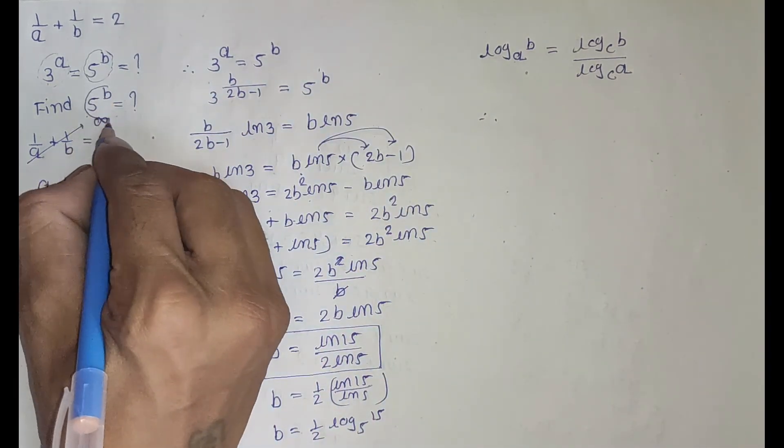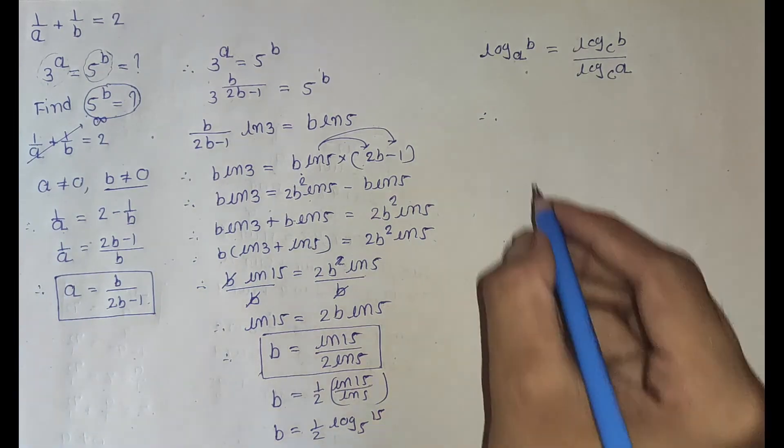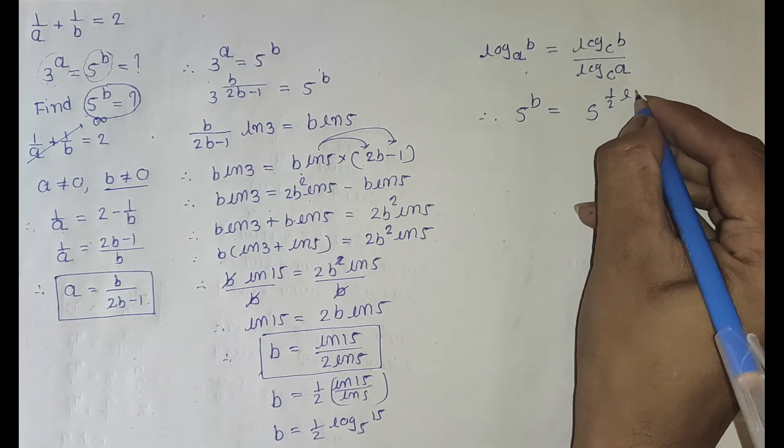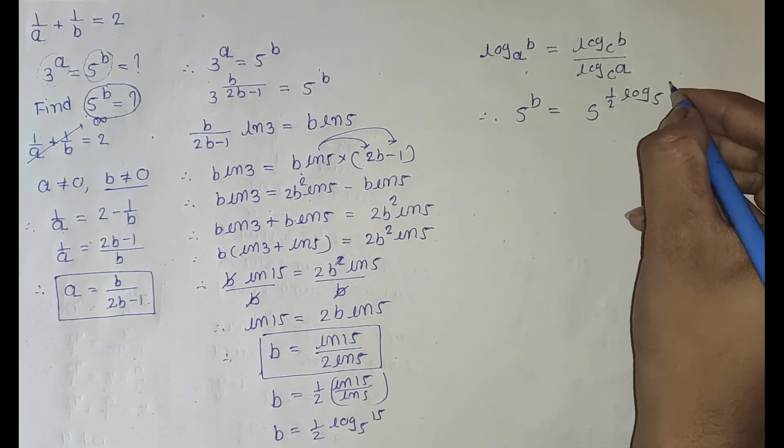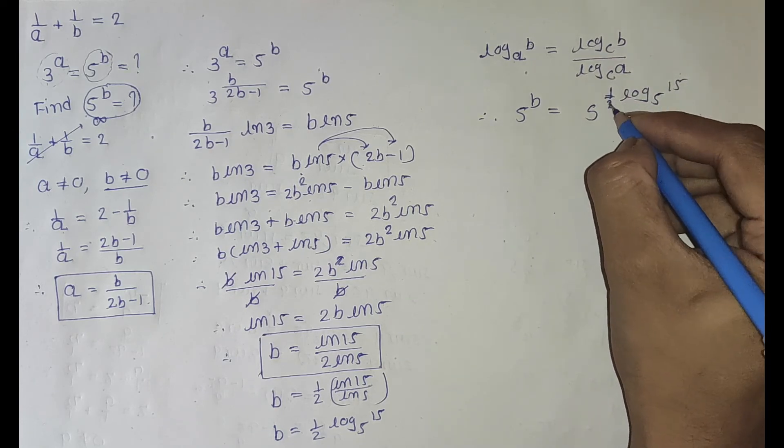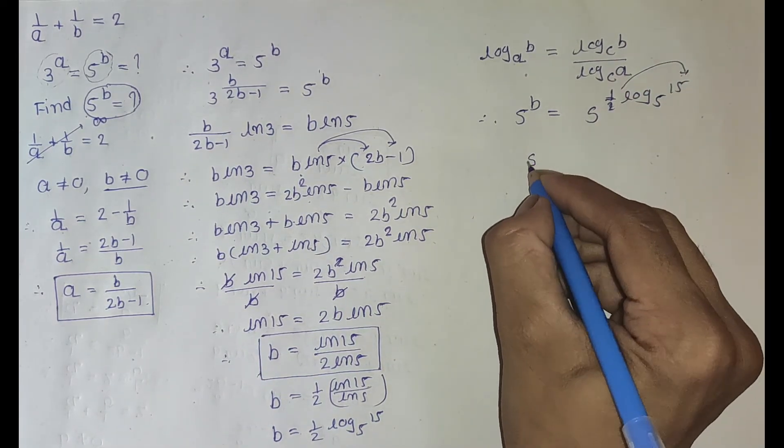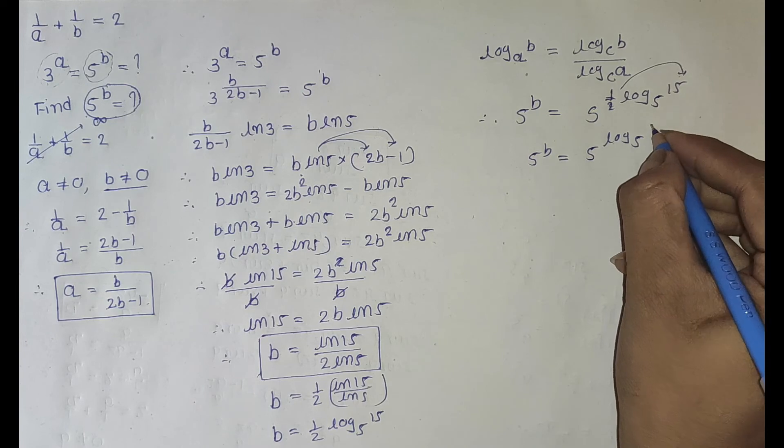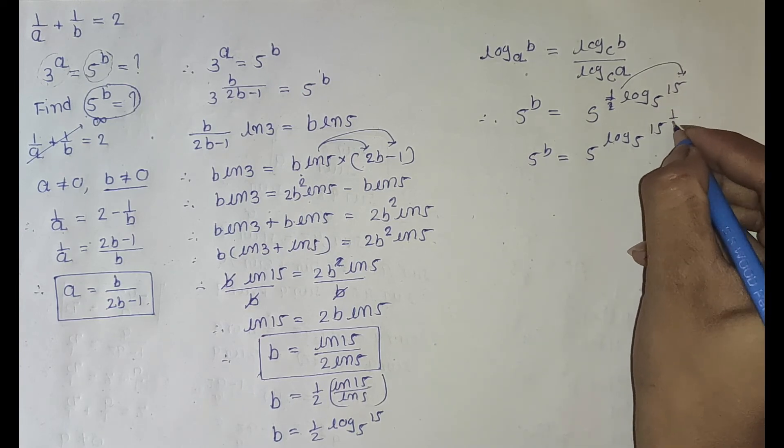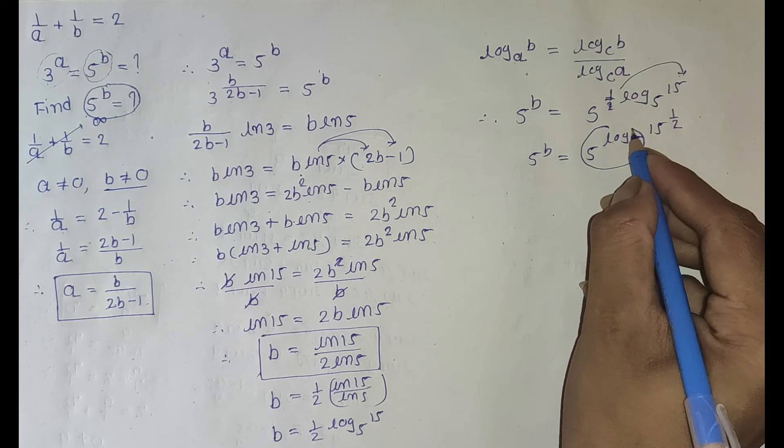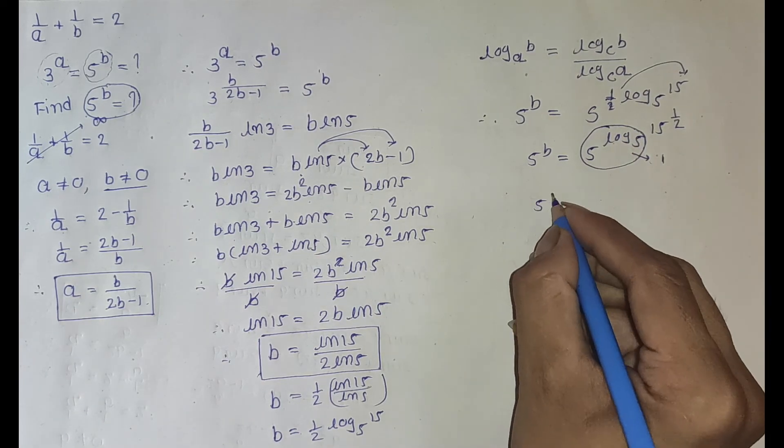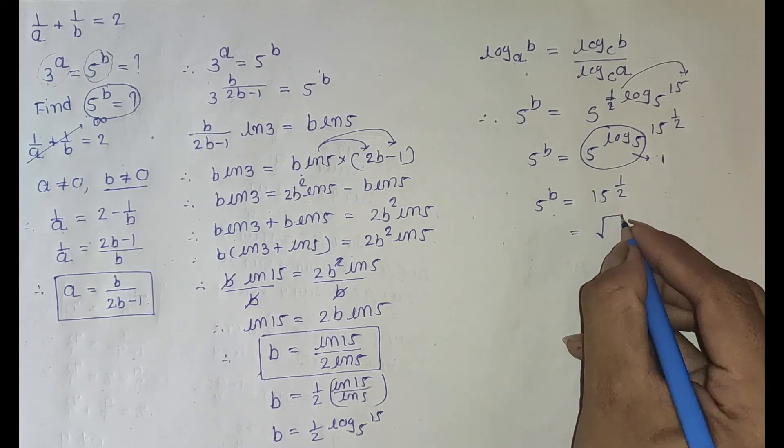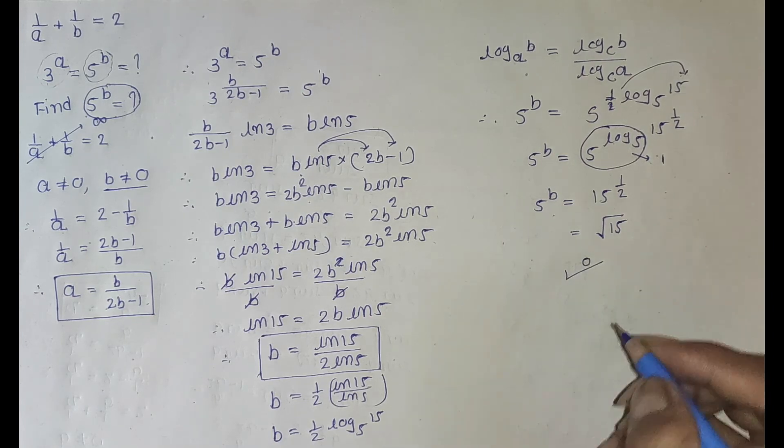Now we have to find value of 5 raised to b. 5 raised to b equal to 5 raised to 1 half log base 5 of 15. This 1 half comes here. 5 raised to b equal to 5 raised to log base 5 of 15 raised to 1 half, and this equal to 15 raised to 1 half. Therefore 5 raised to b equal to square root 15, and that is the answer.